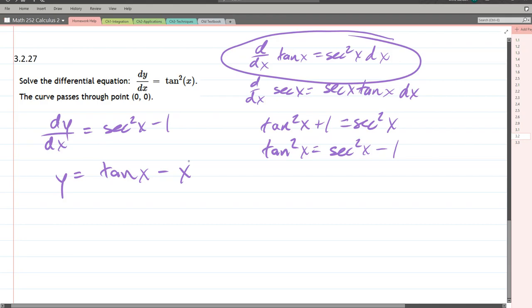And you can check it by taking a derivative. We take derivative of tangent, we get secant squared. Derivative of negative x is negative 1. So that works out. Don't forget, we just took an antiderivative, so we also get a constant here.